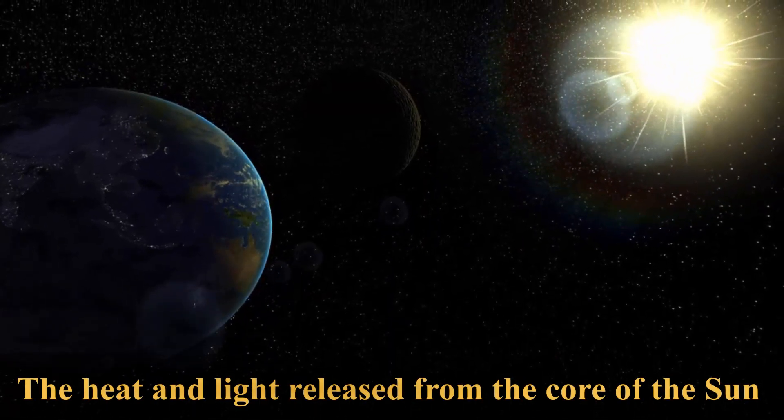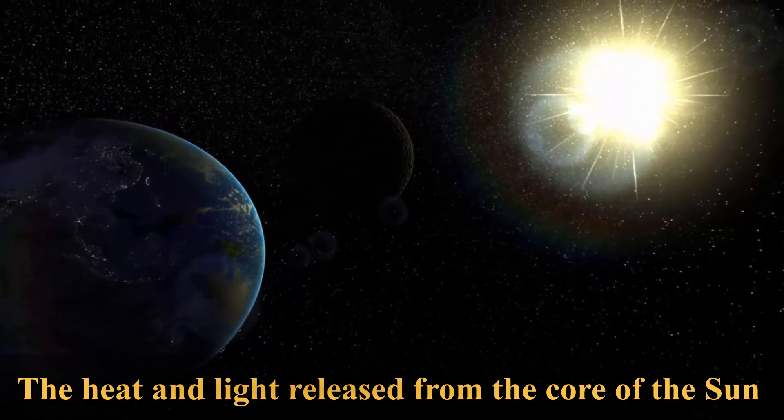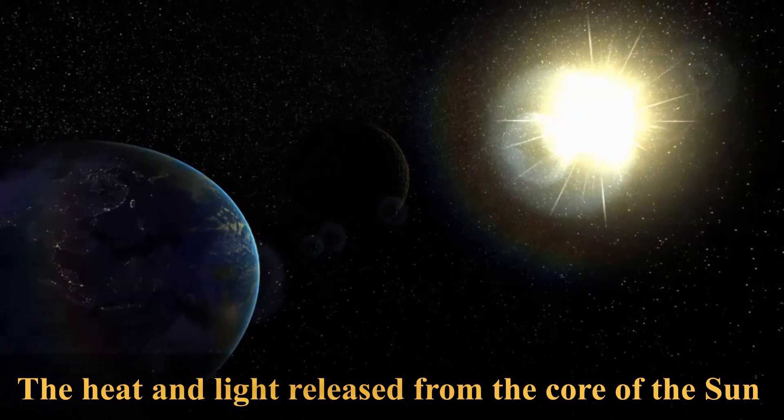The heat and light released from the core of the Sun, initially as gamma rays, takes approximately 1 million years to reach its surface.